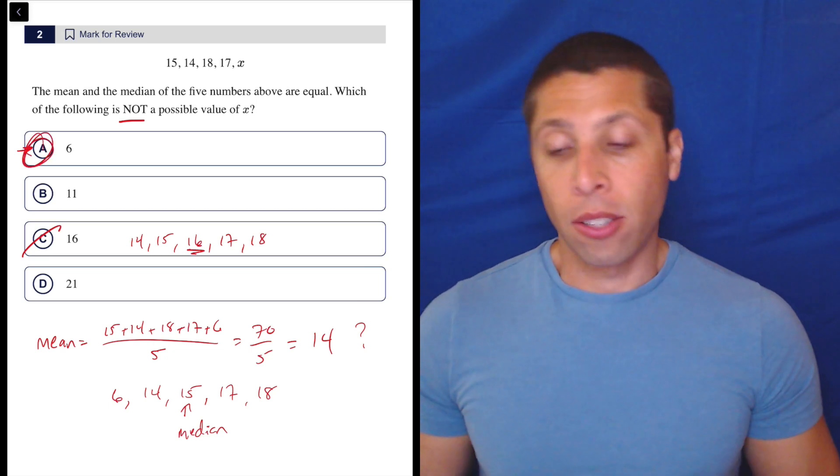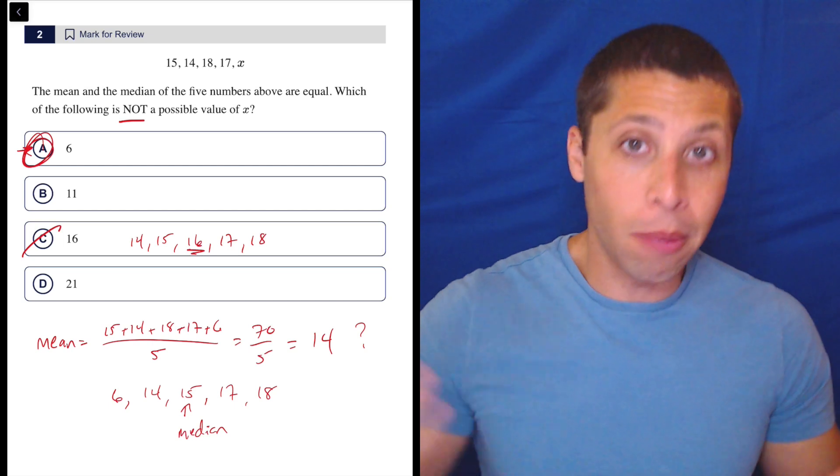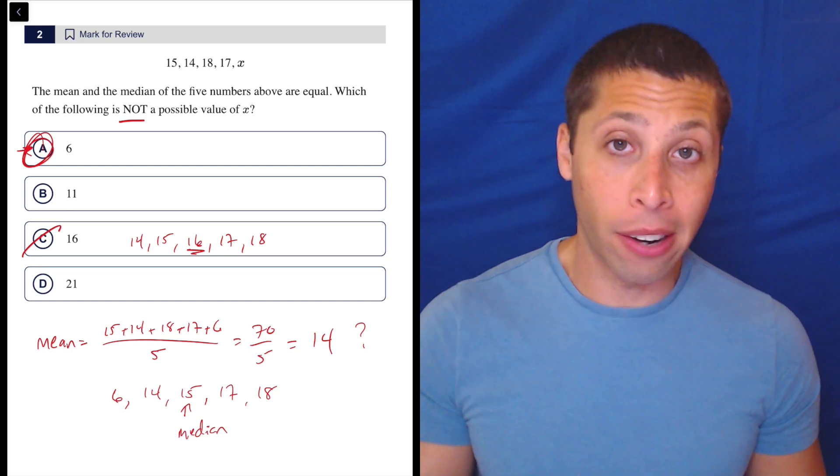I wouldn't bother to try B and D at this point. So I'm sure if we do B and D, we will get that the mean and the median are the same. It has to be that way. I don't really care enough to do it.